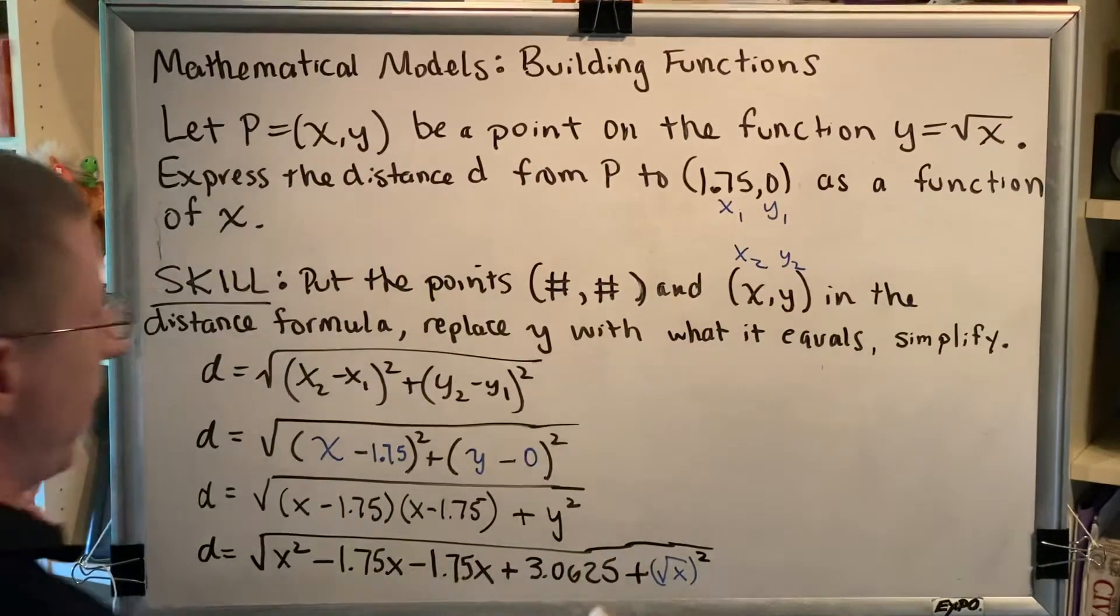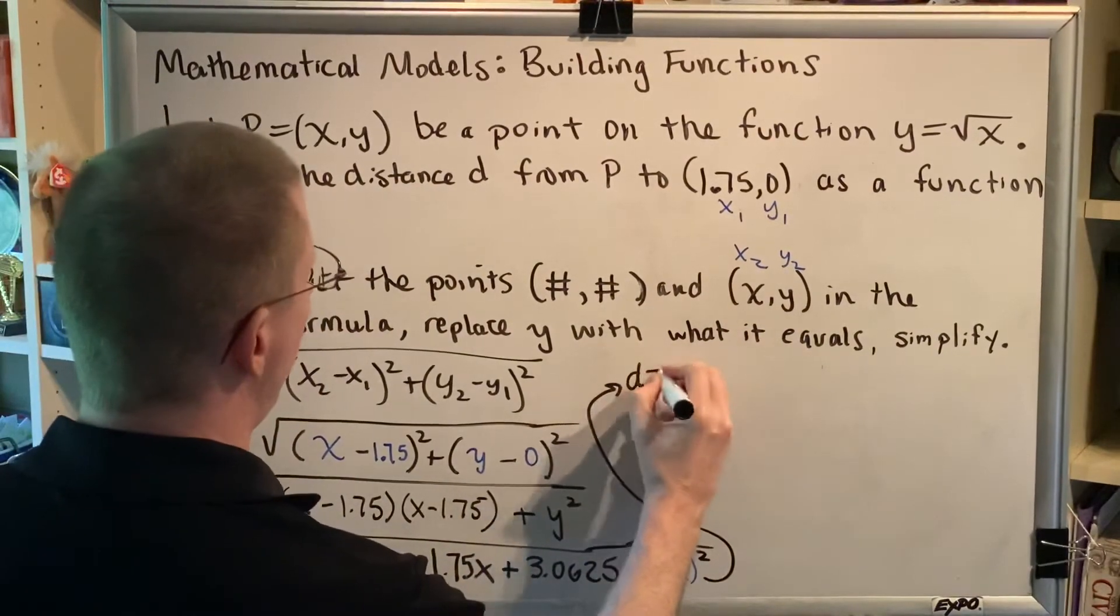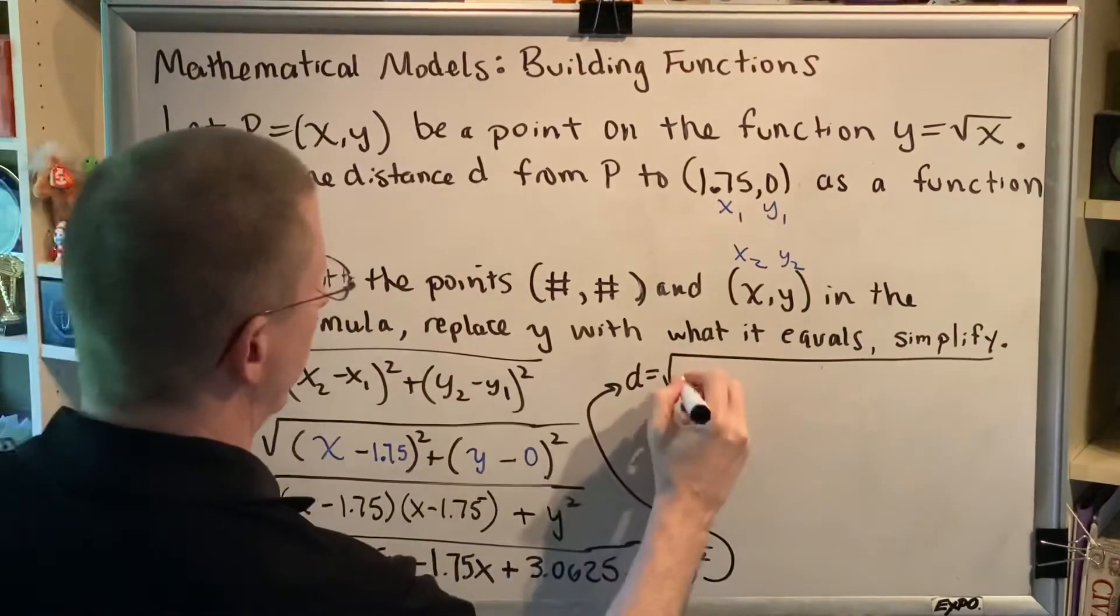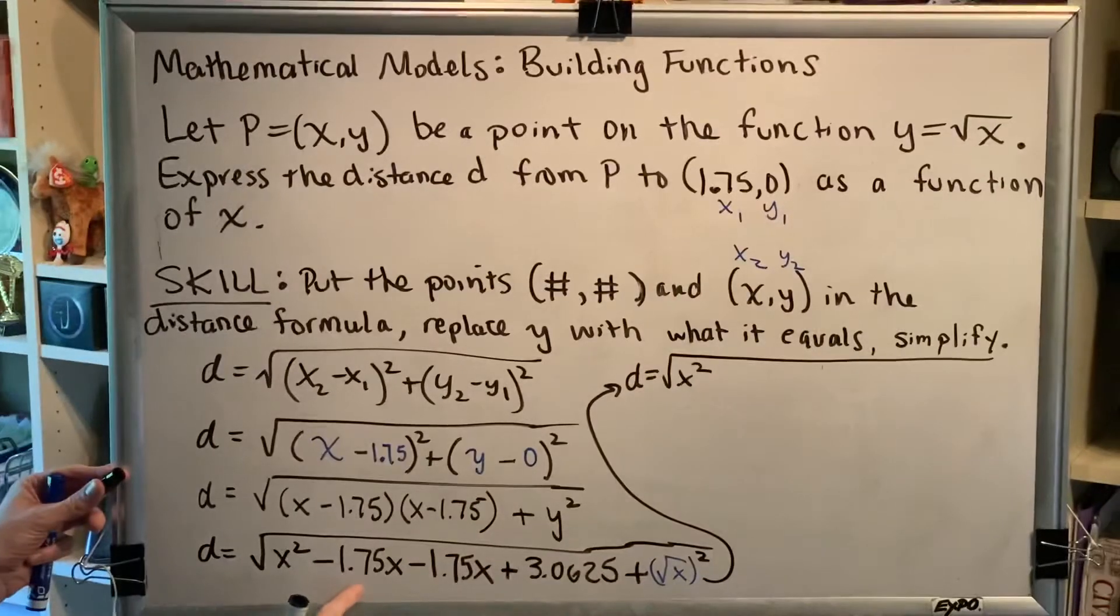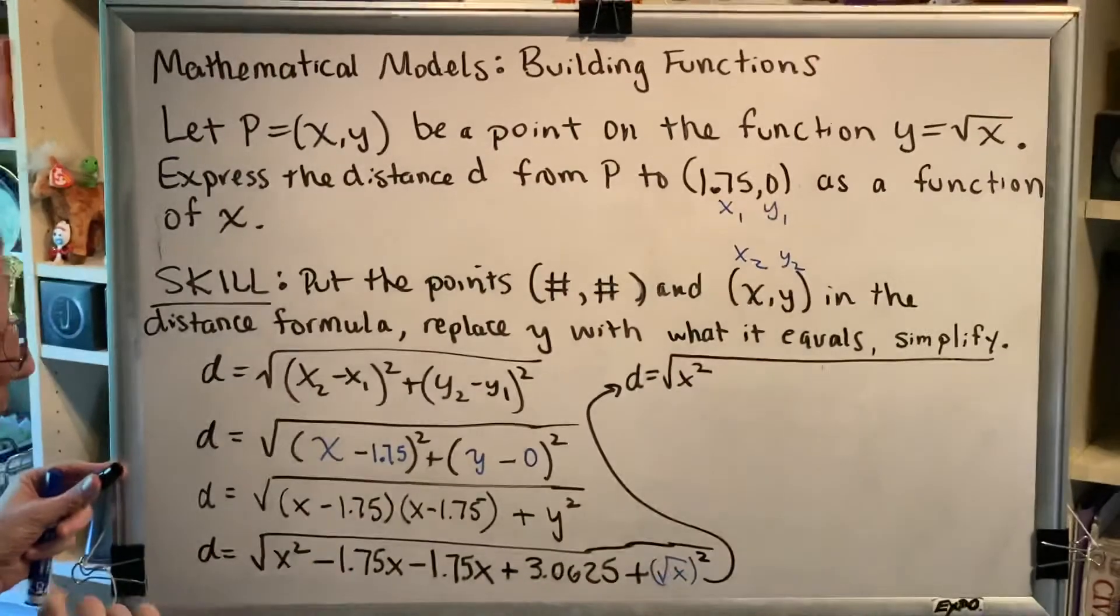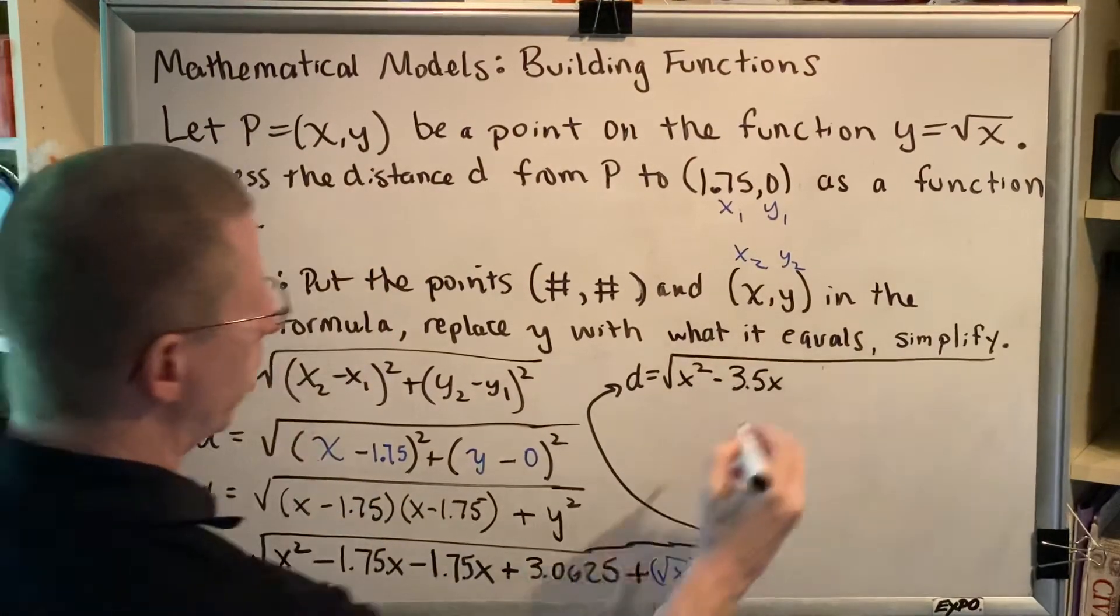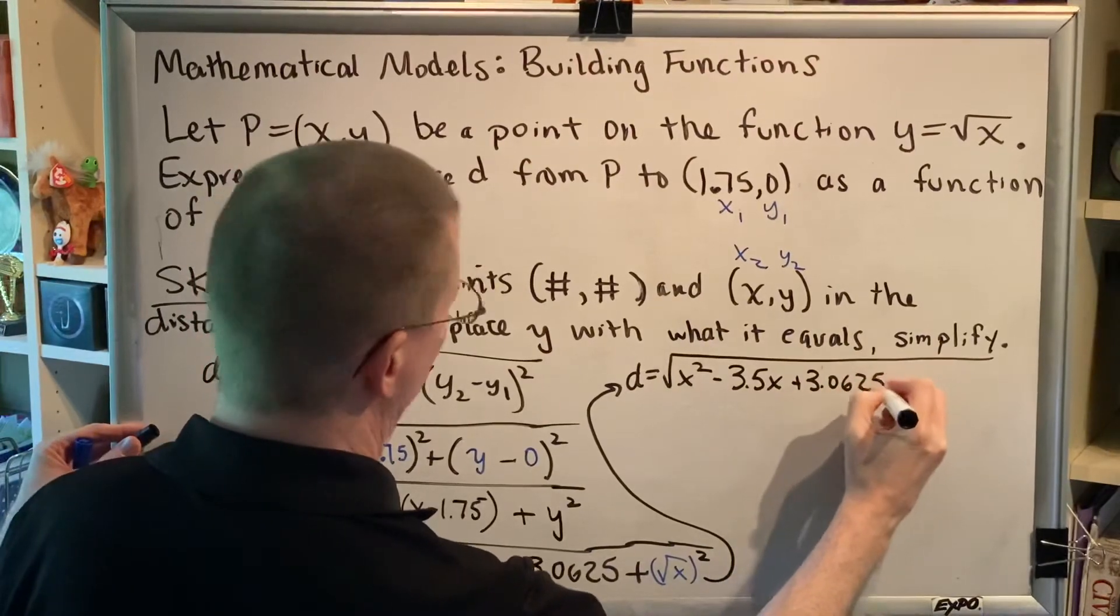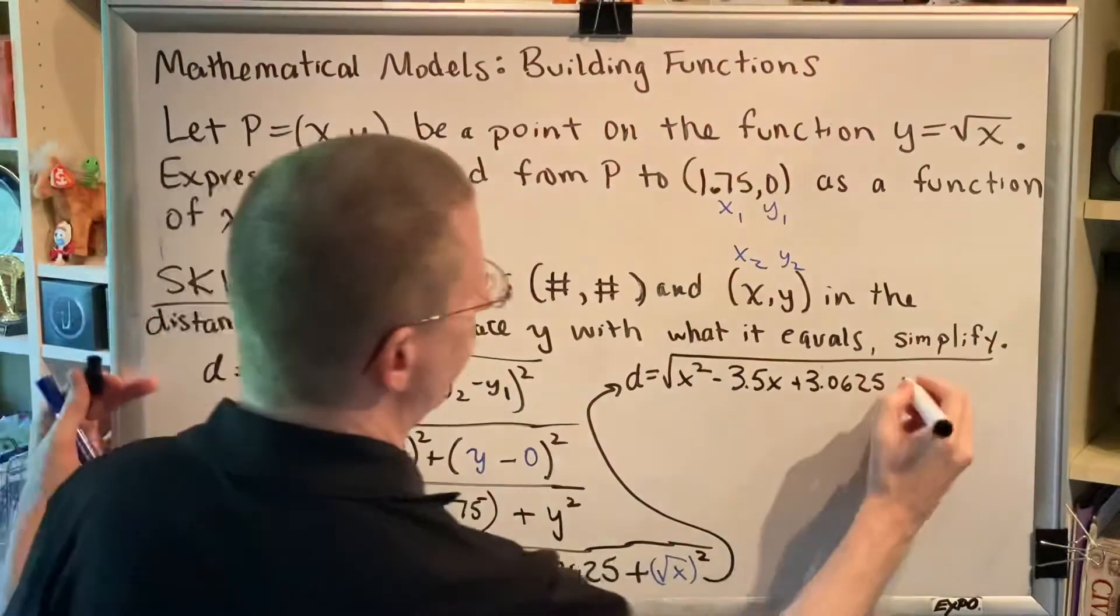All right, and now I'm going to begin to combine some things and to simplify. So let's go ahead and move up here. d equals square root of, so we have an x². We're going to combine these together. -1.75 minus another 1.75 makes -3.5x plus 3.0625. And then a square and a square root cancel. So this is just going to give me x.